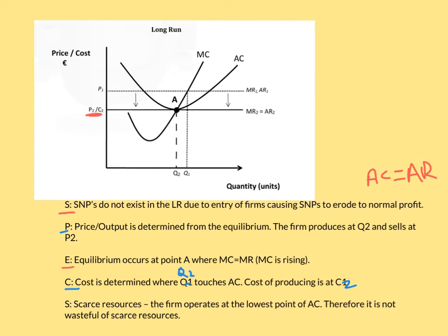Finally, C stands for cost — our cost is determined where Q2 touches AC, so the cost of producing is at C2, which now equals the price. Then S stands for scarce resources — the firm operates at the lowest point of AC. If they were operating higher up, they could reduce their costs by simply producing more or less. By producing at the lowest point of the AC curve, they are the most efficient and not wasteful of resources.